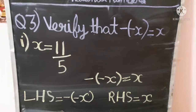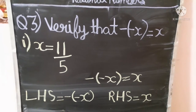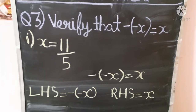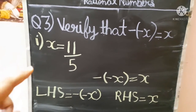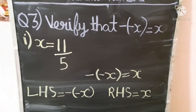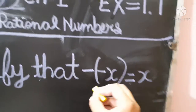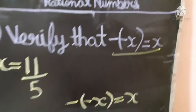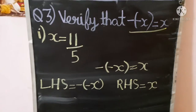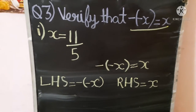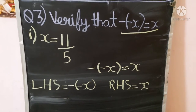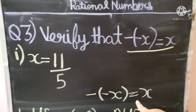Now let's move to Question 3. In this we also have two parts and we have to verify the statement: minus minus x equals x. In the first part, x is given as 11 upon 5. We are given this equation to verify. I will do it in LHS and RHS form. LHS means left-hand side and RHS means right-hand side — before the equals sign is LHS, after is RHS.